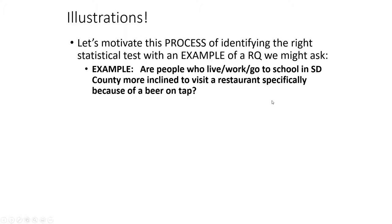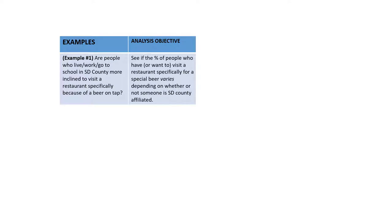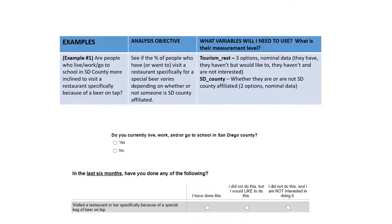We're going to motivate this by way of example. Specifically: are people who live, work, or go to school in San Diego County more inclined to visit a restaurant specifically because of a beer that's on tap? This is a rather realistic example because there are prestige beers in the craft beer industry. For example, Pliny the Younger is a rare triple IPA released infrequently. Restaurants and bars commonly do raffle tickets, charge extreme prices, and have hour-long waits so people can taste this particular beer. To investigate this, we will look at two survey questions in our craft beer data set.